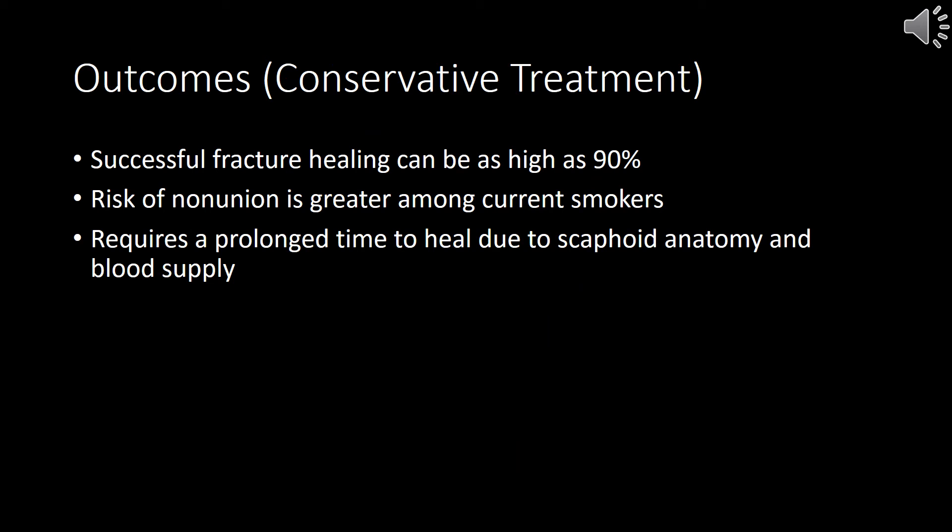Outcomes after conservative non-surgical treatment can be as high as 90%. There is a risk of non-union, which is higher among smokers. Non-operative treatment also requires a prolonged time to heal due to the scaphoid anatomy and blood supply.